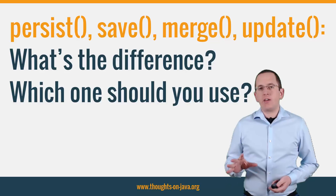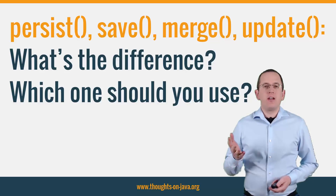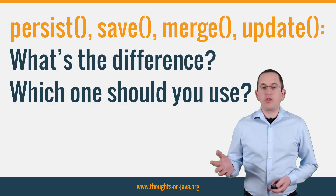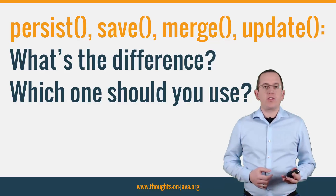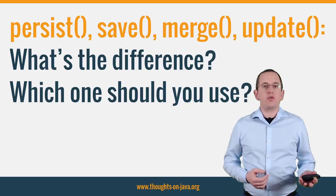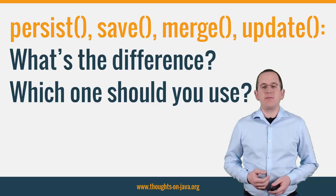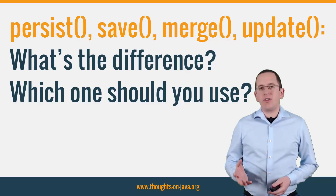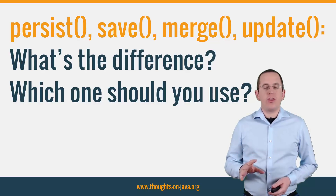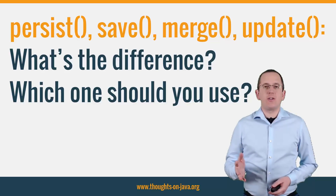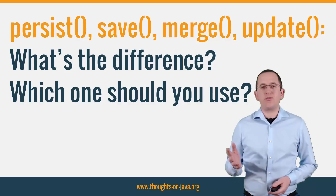It seems like there are 2 pairs of methods that do the same. You can use the methods persist and save to store a new entity, and the methods merge and update to store the changes of a detached entity in the database. That's why a lot of developers are wondering which of these methods they should use. Let's take a closer look at the details and small differences of these methods.